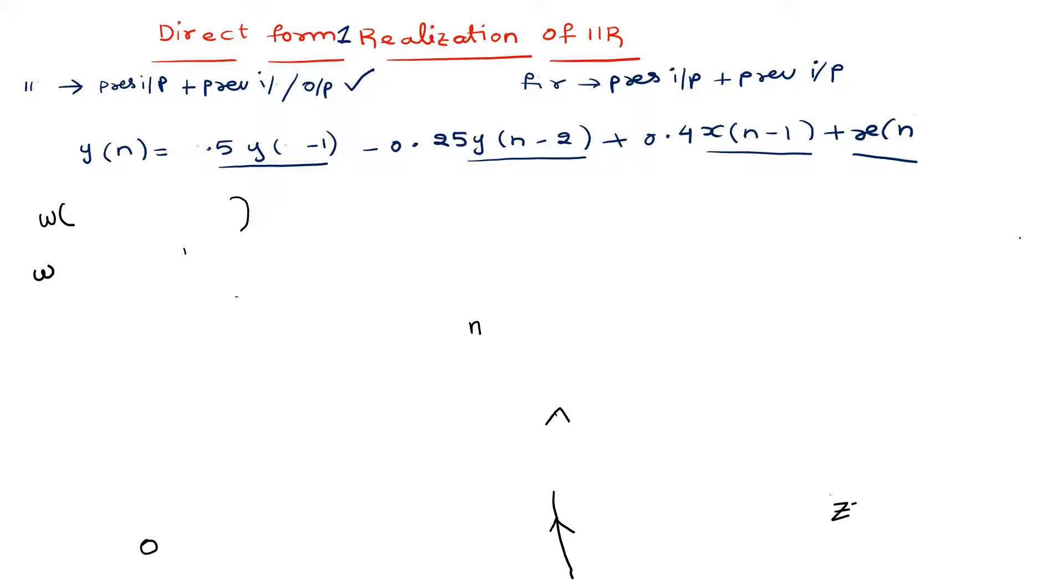To realize this, take one intermediate variable ω(n). Make that ω(n) contain the x terms. We can group these as ω(n) = x(n) plus